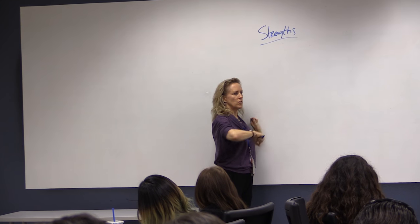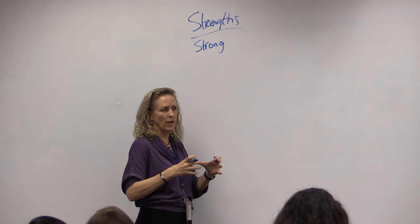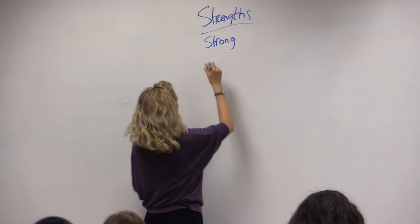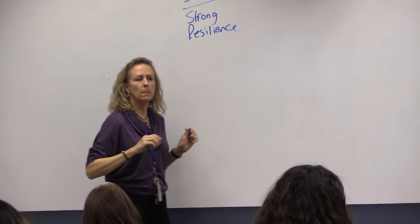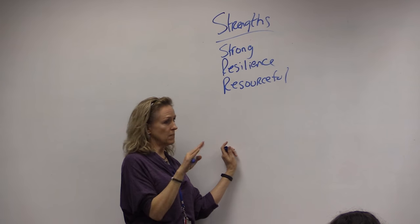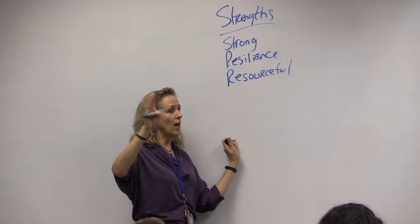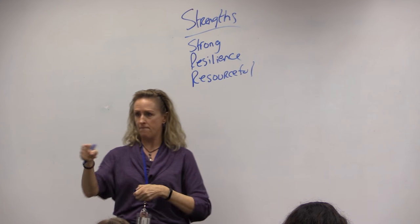What strengths did you come up with? She's strong for everything she's been through — so we hear resilience. Resilience means that even in the most difficult situations, someone has the ability to overcome. Another group found that she had sought resources; she was on welfare, which means she found a way to get resources. Navigating the welfare system is not easy — a lot of people say it's too much work and give up, but she didn't, so she's resourceful.